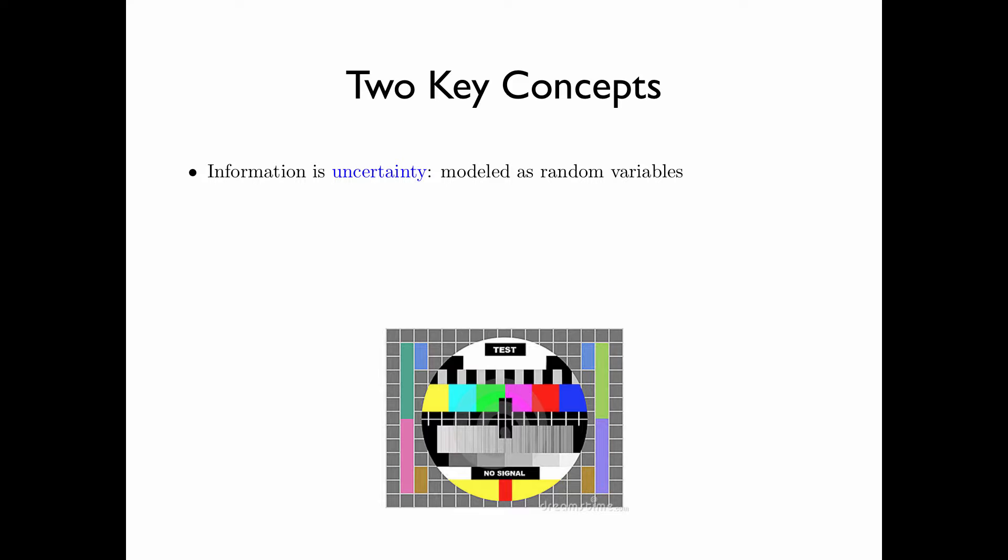From the transmission point of view, this is completely redundant, because the TV set can simply store the pattern in the memory, and then no more transmission is necessary. The point here is that there must be uncertainty associated with the information source; otherwise, it does not need to be transmitted at all. So naturally, an information source is modeled by a random variable.